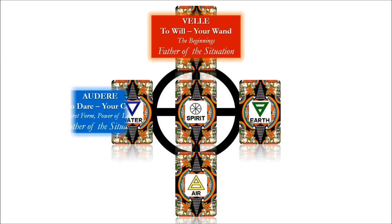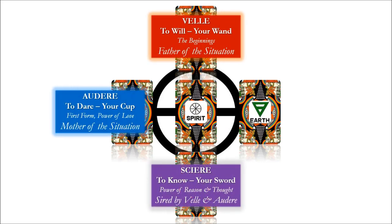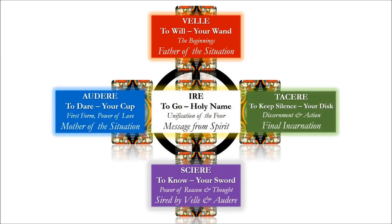It's not necessary to write anything down just yet. For now, watch, observe, and get a lay of the land. Later we will be walking through each step of the reading together, card by card. The four cards around the circle will be drawn from the top of your shuffled tarot deck, and the center card will be drawn from the bottom.